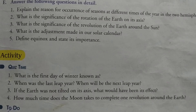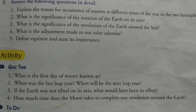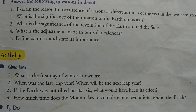The one-fourth remaining day is accumulated and added as an extra day in the calendar year as 29th February after every four years. Full stop. That year is known as the leap year. Full stop.